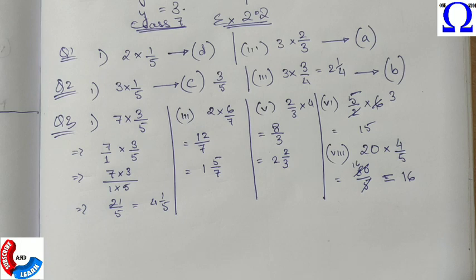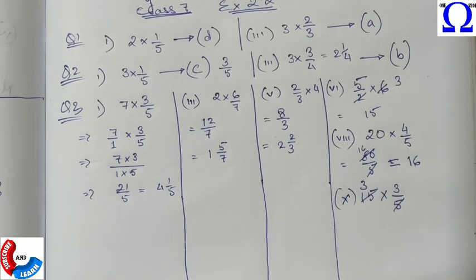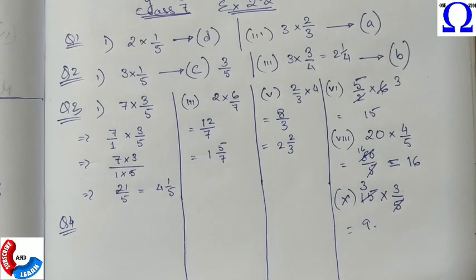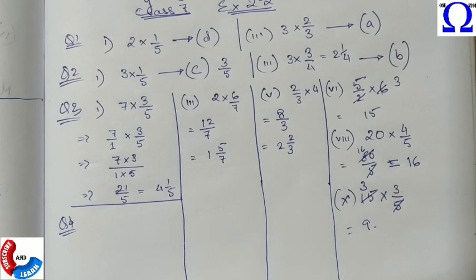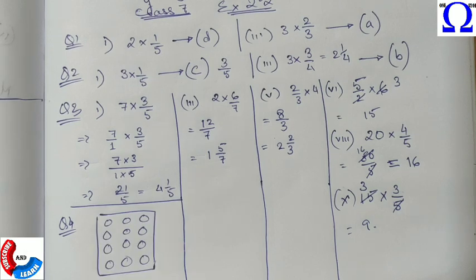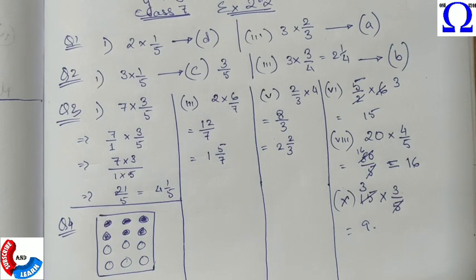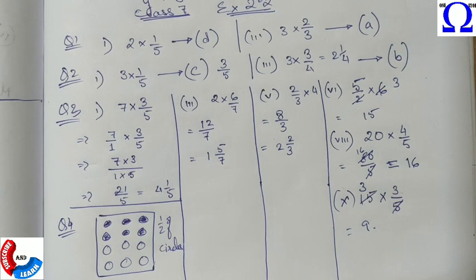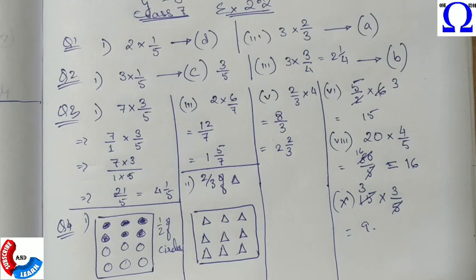Moving on to question number 4, we need to draw the given figures. I'm doing it roughly. Now I need to shade half of the circles in the box, so this is half of the circles in the box.